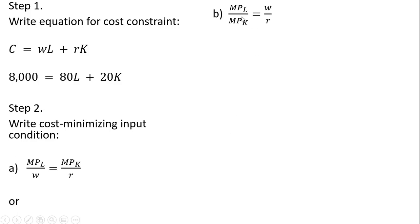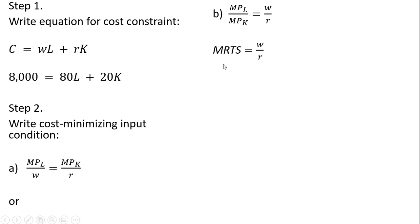Alternatively, we could write that condition by dividing through by the marginal product of capital and multiplying through by the wage. Written this way, the left-hand side — the marginal product of labor over the marginal product of capital — is what we refer to as the marginal rate of technical substitution. So if you're given the MRTS, you can just set that equal to the wage divided by the price of capital.